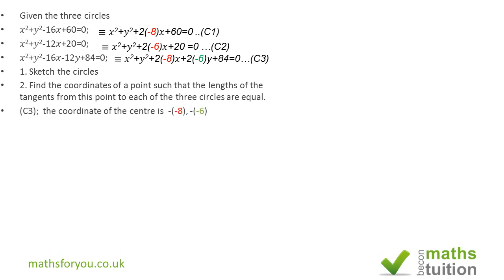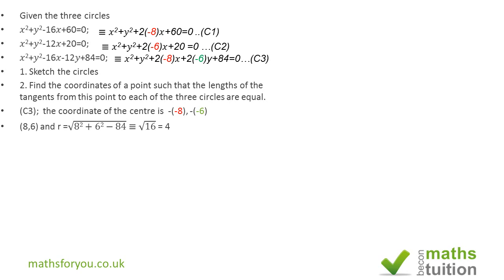Starting with C3: the coordinates of the center are found by taking minus the half-coefficients, giving minus(−8) and minus(−6), which is (8, 6). The radius is the square root of the sum of the squares of those coordinates minus the constant term — so √(8² + 6² − 84) = √(64 + 36 − 84) = √16 = 4. So the center of C3 is (8, 6) and the radius is 4.